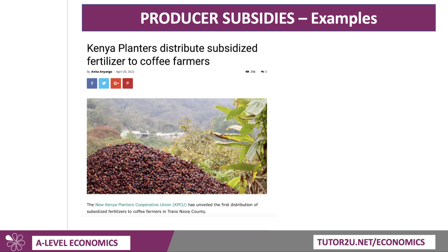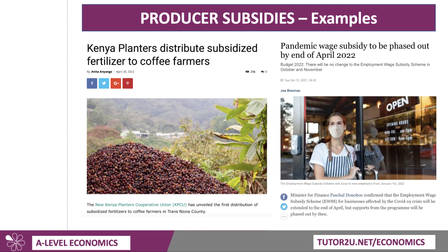There are good examples around at the moment. In Kenya, the Kenya Planters Cooperative Union has unveiled the first distribution of subsidised fertiliser to coffee farmers. Fertiliser is a key variable cost in the production and growing of coffee beans. And in Ireland, and many other countries including the UK, during the pandemic and lockdown, there's been a wage subsidy scheme where the government effectively subsidised the cost of keeping workers on the payroll through the furlough scheme. That wage subsidy paid to Irish firms is due to be phased out by the end of April 2022. So there are always good examples of input subsidies available to producers.